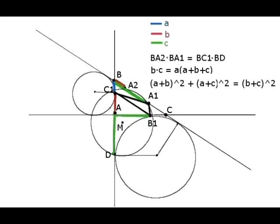Amazingly, the Pythagorean equality (a+b)² + (a+c)² = (b+c)² is equivalent to this equality b·c = a·(a+b+c). If we simplify both sides, we get the same expression. Thus we have reduced our problem to proving that points A2 and D belong to the circumcircle of triangle A1B1C1.